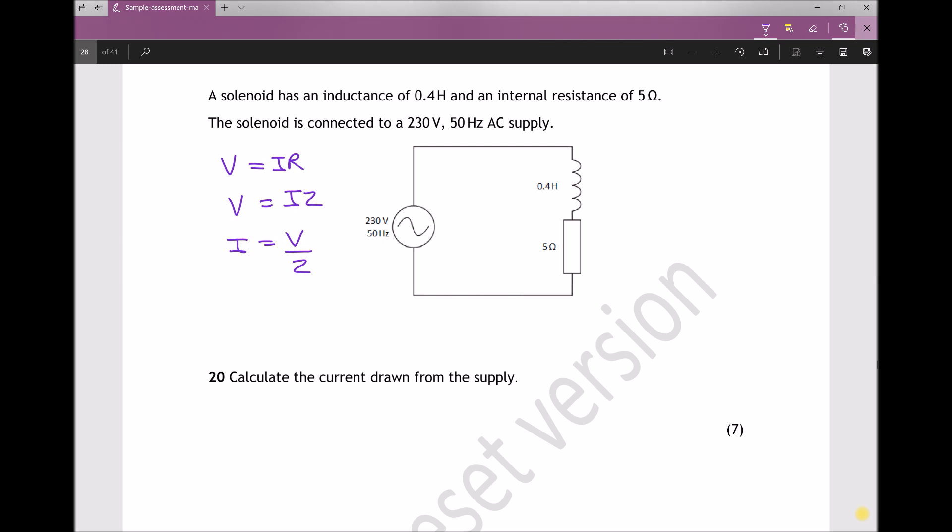So the next question then is how do we calculate Z? Well, the total impedance of this circuit is measured in ohms, but it's different from resistance because it needs to take into consideration the fact that we have reactive components. Now the equation that we have for calculating Z is as follows: Z squared equals R squared, which is the resistance of our passive components, plus X squared, which is the reactance of our reactive components. Or we can state that Z equals the square root of R squared plus X squared.